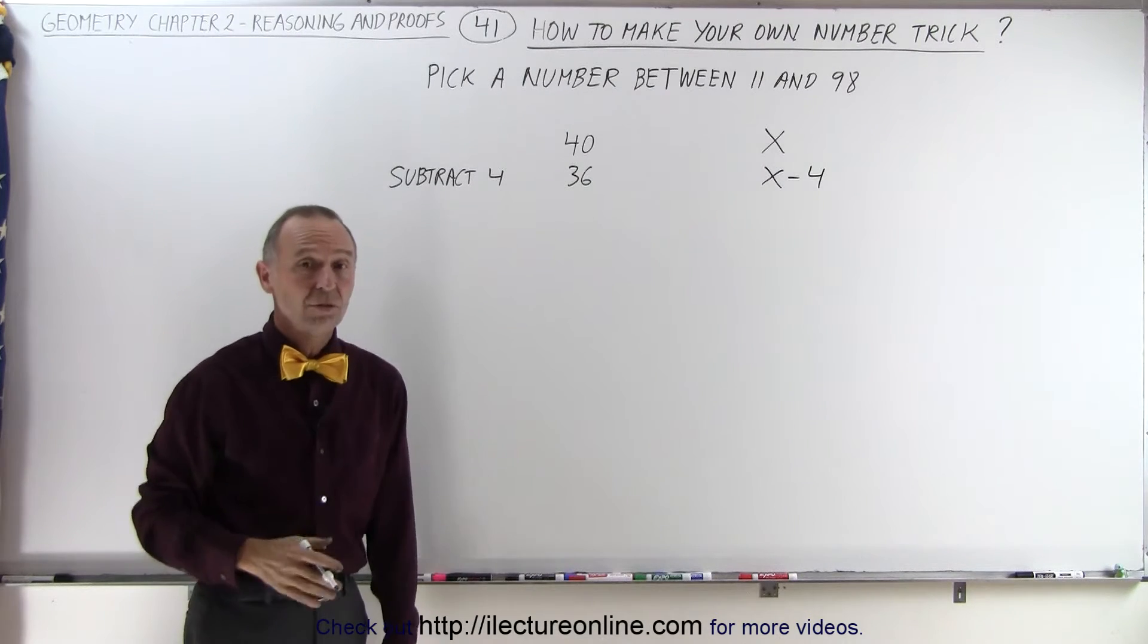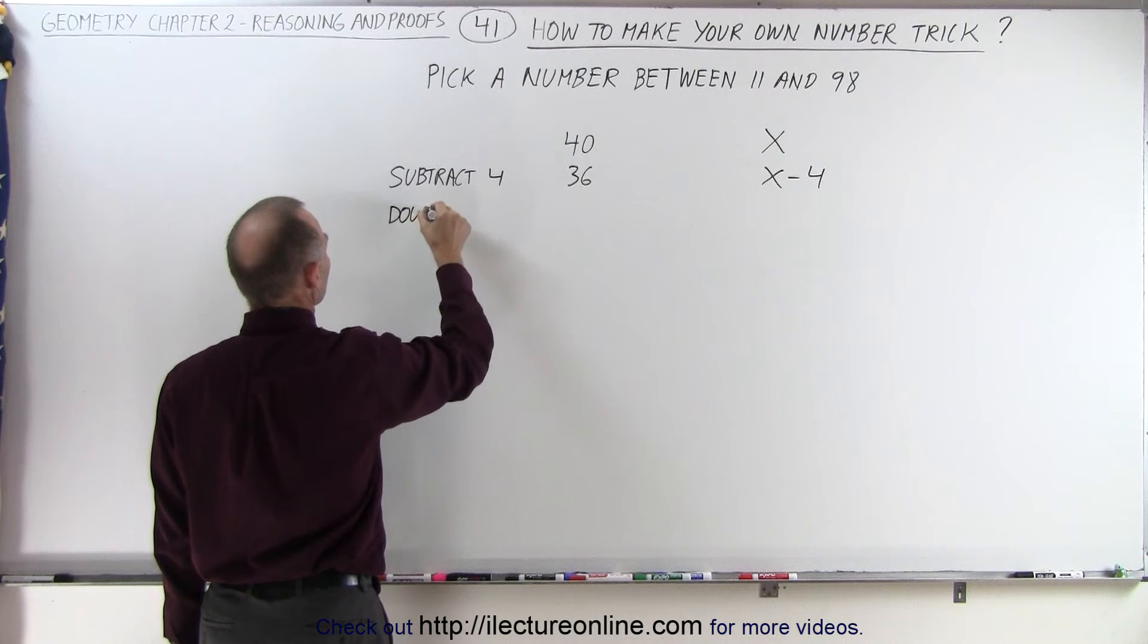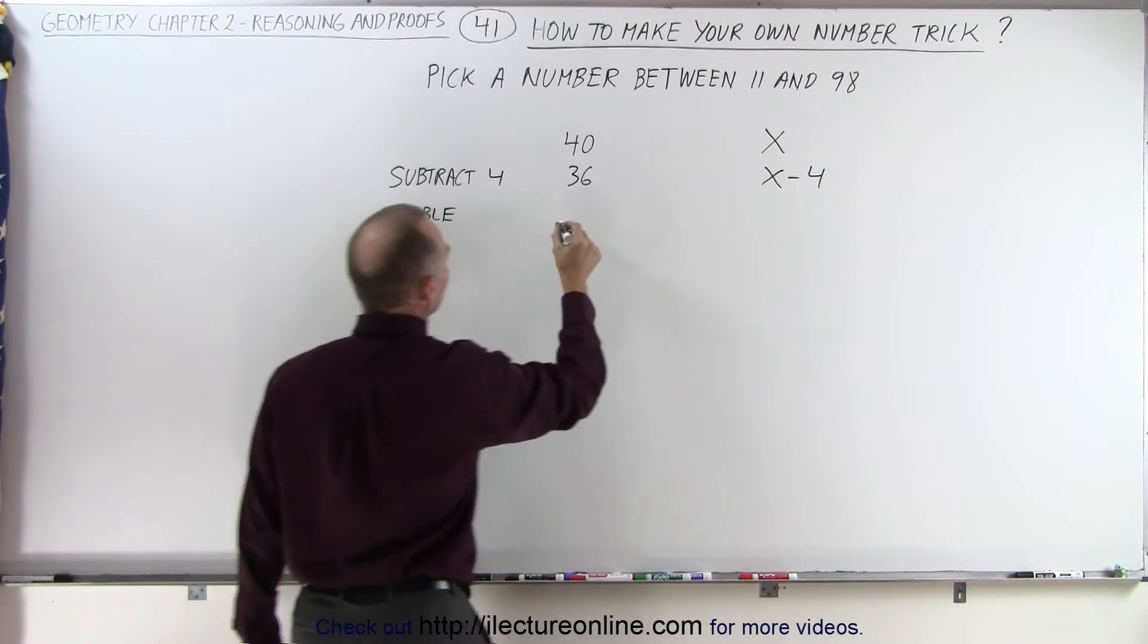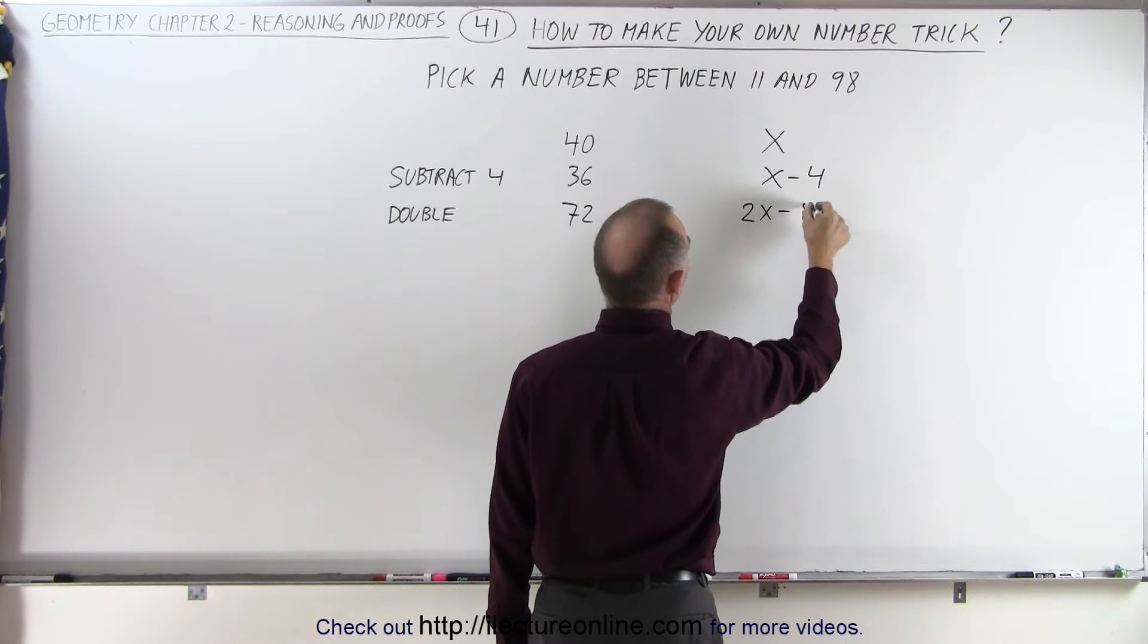So now let's double the number. Double the number, that gives us 72, and double this number, that gives us 2x minus 8.